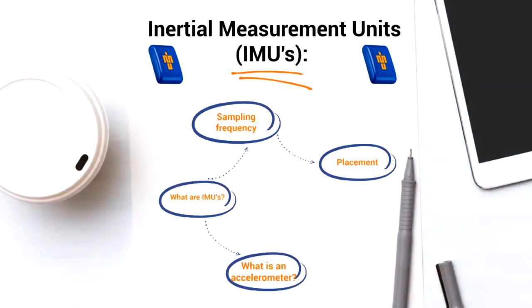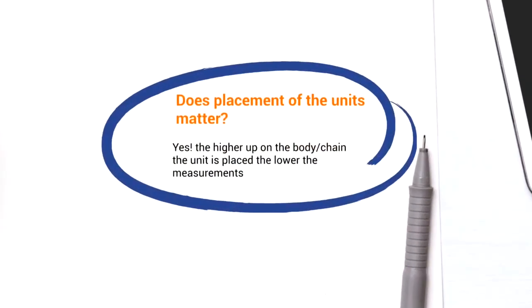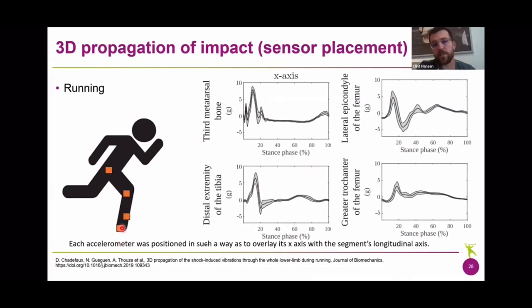Okay, so the last topic we're going to look at is placement of an IMU. Does the placement of an IMU matter? Simply, yes. The higher up on the body or chain the units place, the lower the measurements. This is due to what we call propagation of impact. And here's Dr. Clint Hansen describing the differences and what they look like with sensors placed on different parts of the body. If you're looking always at the vertical acceleration of the signal, always upwards, what we can see is that the acceleration on the third meter tarsal bone level was relatively high and reduces the higher we go up the chain. So here it's up to 10 G maybe. Over here it's up to seven or eight. When we're looking at the femur or the knee level more or less, then we get only 5 G maybe. And if we're looking at the greater trochanter, well, then it's even lower.